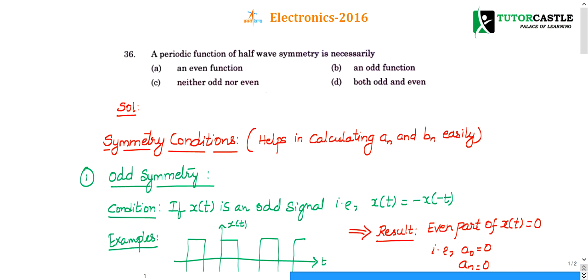This is a simple, concept-based question. You might have known what is Fourier series and what is an expansion of Fourier series. In a Fourier series expansion you will have an, bn, and a0 — three terms will be there.